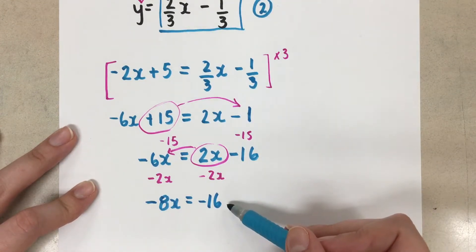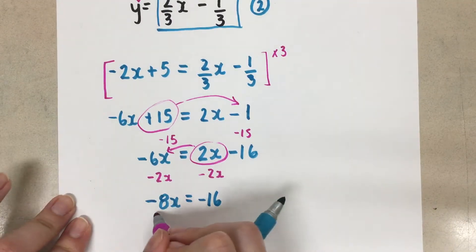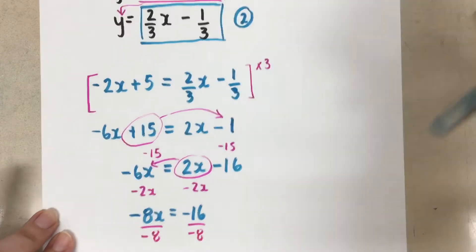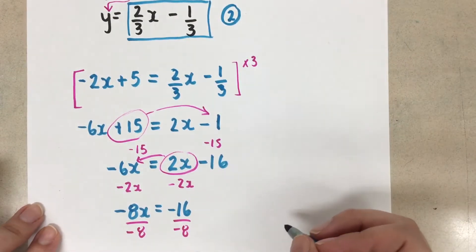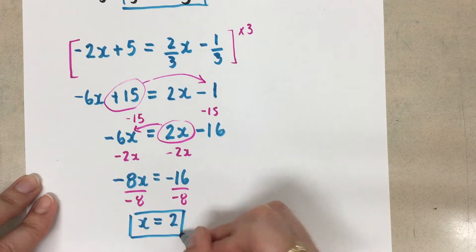And on the other side we're left with negative 16. So we have just a one-step equation left to solve. To get that x by itself, we're going to divide by the negative 8. And so negative 16 divided by negative 8 leaves us with x equals positive 2.